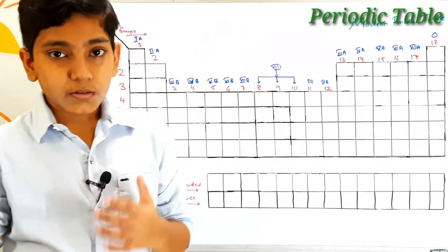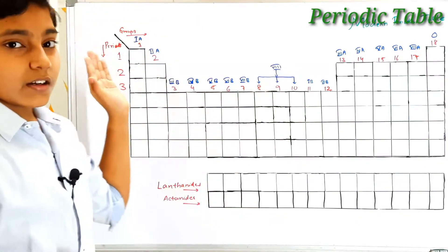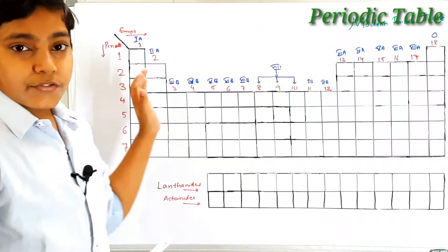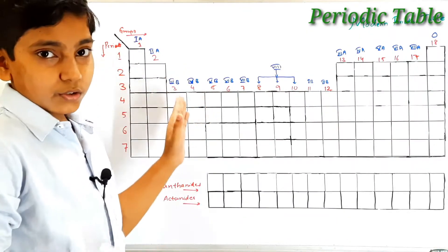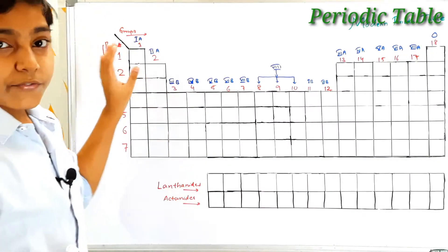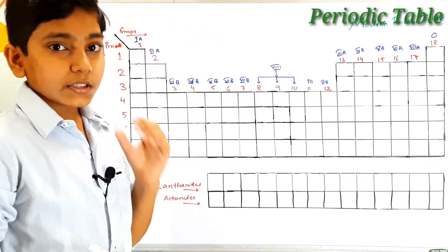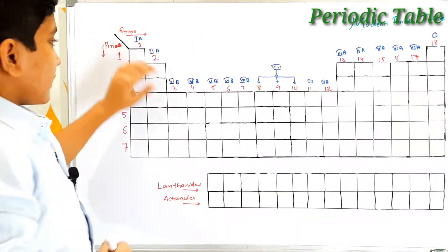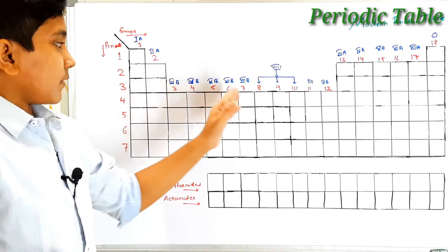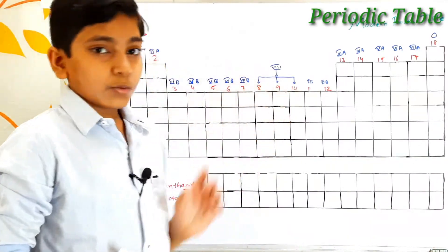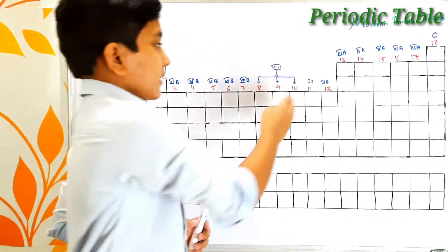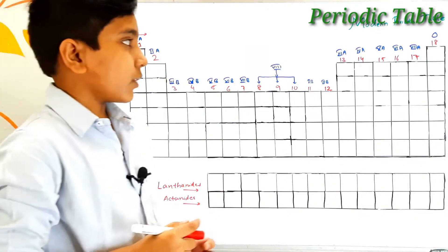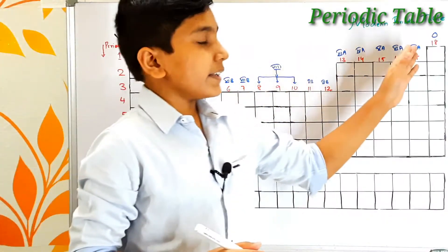This 1 to 18 numbering scheme is a newer one. In the old scheme, the first group elements are also called 1A group elements and the second group elements are called 2A group elements. From the third group onwards it is called 3B, and elements at the top end with A while those at the bottom end with B. From 3B we have until 7B, and after that groups 8, 9, and 10 were commonly called the 8th group. The 11th group is also called 1B, the 12th group is 2B, the 13th group is 3A, and so on up to the 17th group which is 7A. Finally, the 18th group is called the zero group elements.